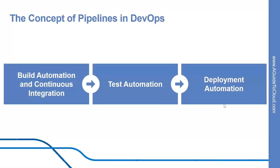A deployment is required every time the application is installed in an environment for testing, but the most critical moment for deployment automation is rollout time. Since the preceding stages have verified the overall quality of the system, this is a low-risk setup. The deployment can be staged, with the new version being initially released to a subset of the production environment and monitored before being completely rolled out. The deployment is automated, allowing for reliable delivery of new functionality to users within minutes if needed.